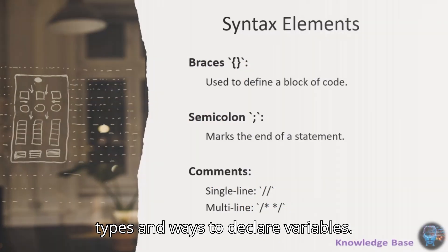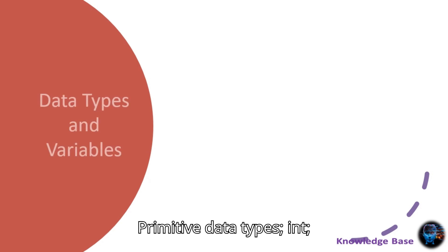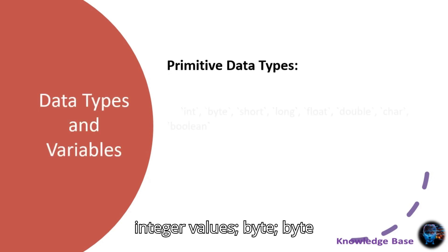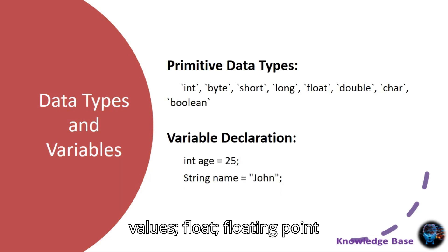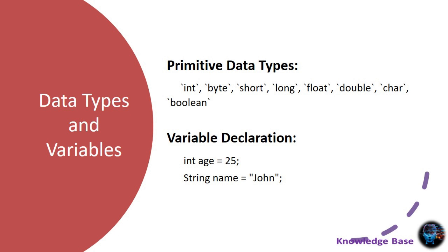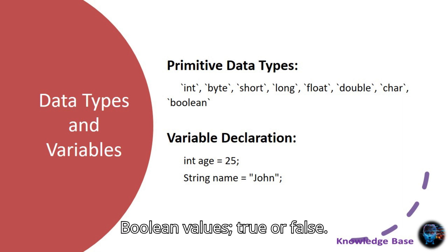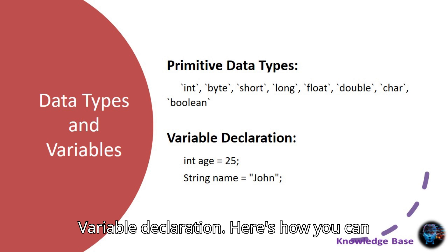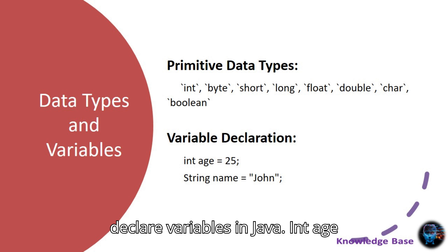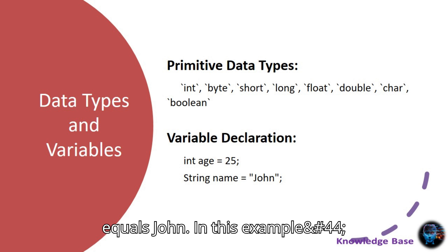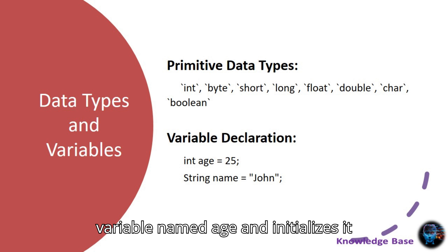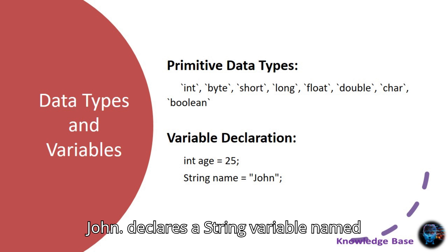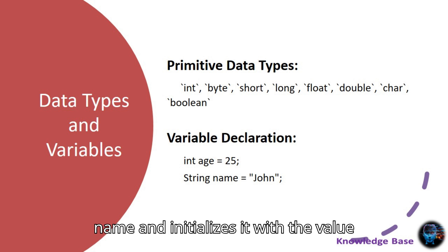Java has several primitive data types and ways to declare variables. Primitive data types include: int for integer values, byte for byte values, short for short integer values, long for long integer values, float for floating point values, double for double precision floating point values, char for single characters, and boolean for boolean values — true or false. For variable declaration, here's how you declare variables in Java: int age = 25; String name = "John". int age = 25 declares an integer variable named age initialized with 25, and String name = "John" declares a string variable named name initialized with the value John.